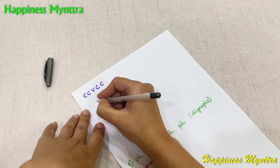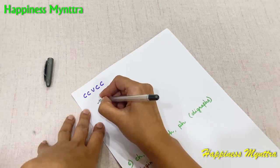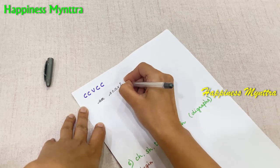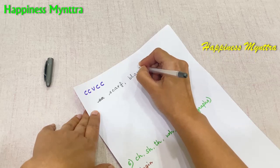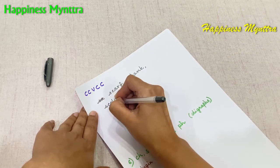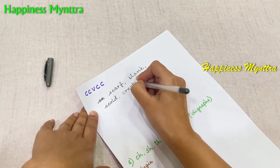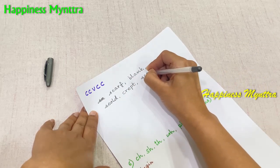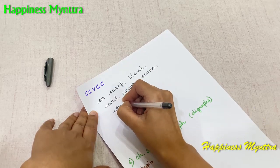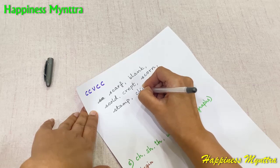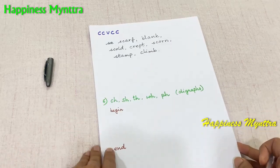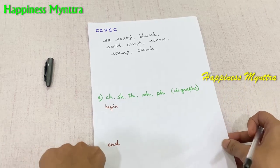Now we move on to CCVCC words — using blends in the beginning as well as the end of the word — so they move on to five-letter reading, which is a very easy transition. Common examples here would be 'Scarf,' 'Blank,' 'Scold,' 'Crept,' 'Scorn,' 'Stamp,' 'Climb,' and of course many more words. I cannot have an exhaustive list here as the video would get too long.